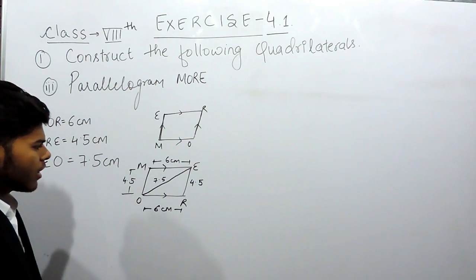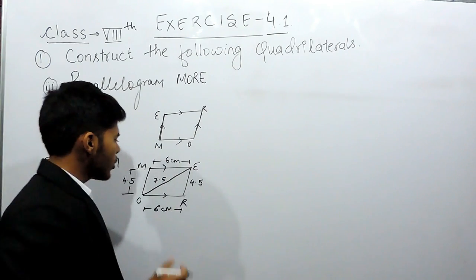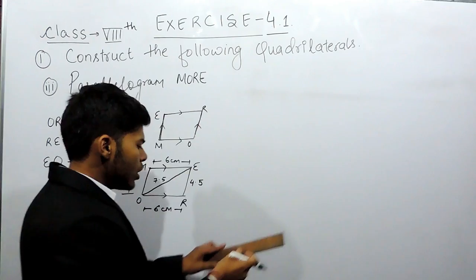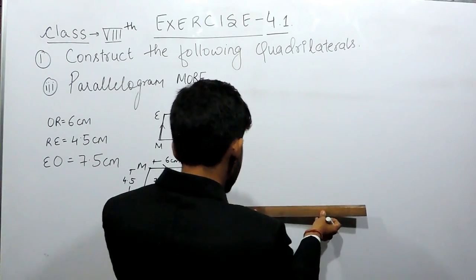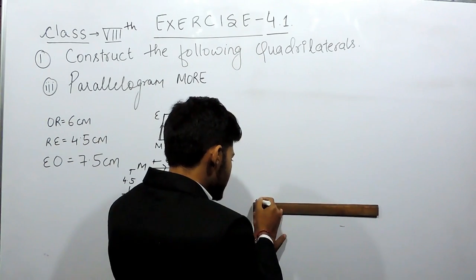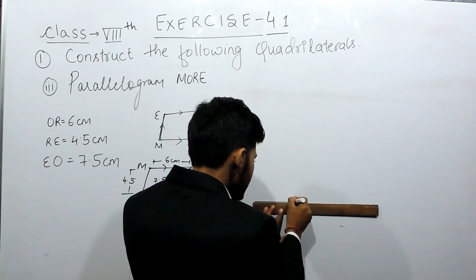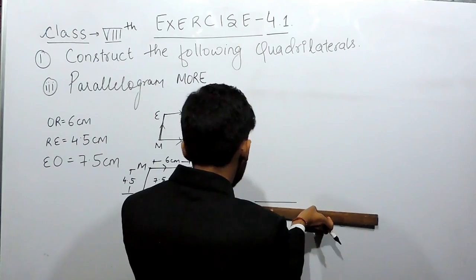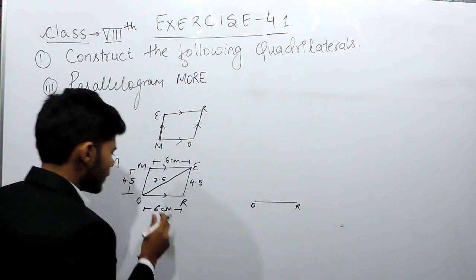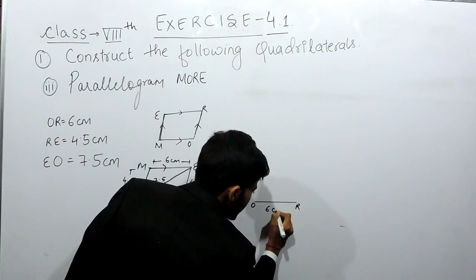Now we'll construct this. First of all, to construct this in your notebook you need a scale, a compass, and a pencil. So first of all we'll keep this scale on the page and mark a line segment of 6 centimeters. This is 0, so 0 to 6, 6 centimeters. Now we'll name it OR. This is 6 centimeters.